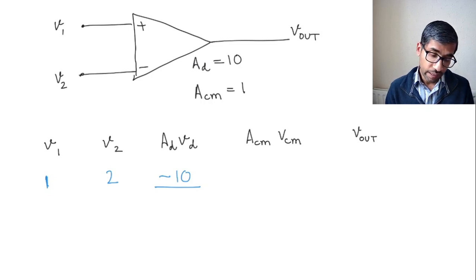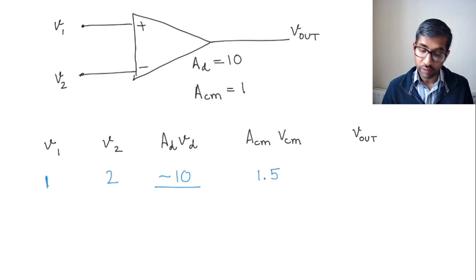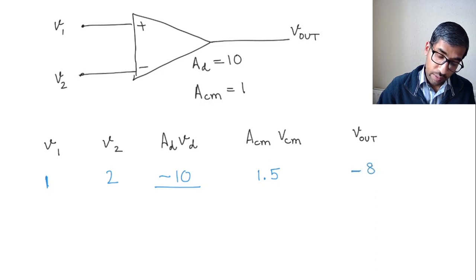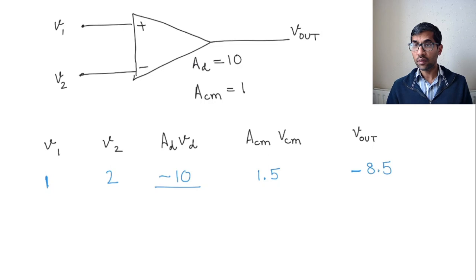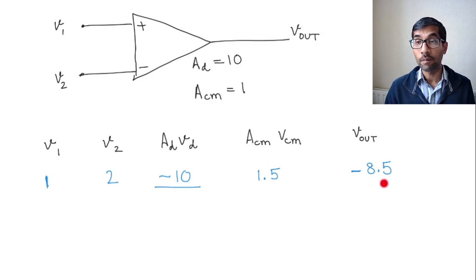Now what about ACM times VCM or the common mode voltage at the output? So what is VCM? VCM is V1 plus V2 over 2, right? So what we have is 1 plus 2, that is 3, divided by 2, 1.5 times 1, which is 1.5 volts. So this is going to be 1.5. And therefore, what is your Vout going to be? Your Vout is going to be minus 8.5 volts. Does that make sense? So there is an amplification of the differential voltage, there is an amplification of the common mode voltage, and both of them add together to give you the output voltage.